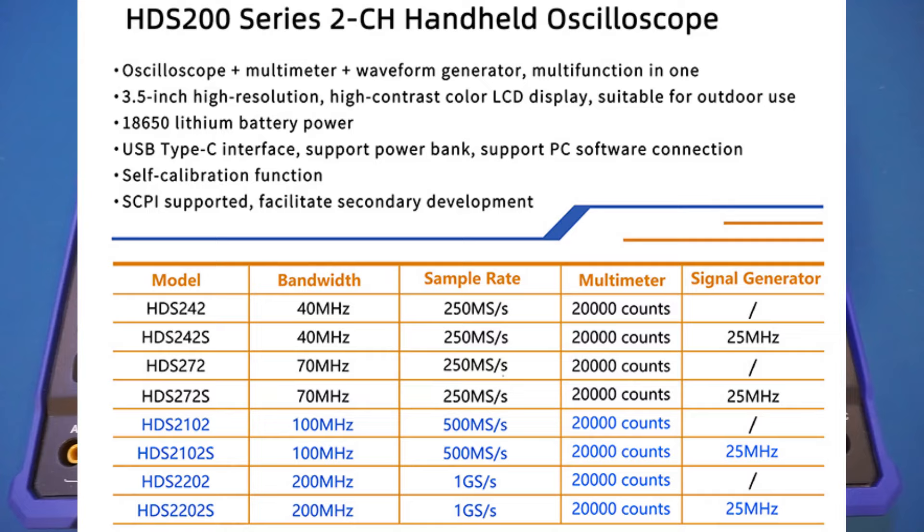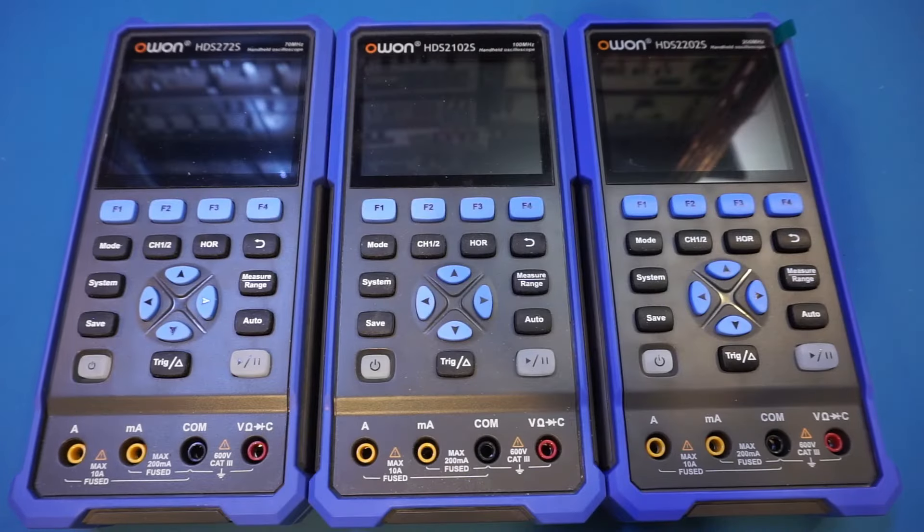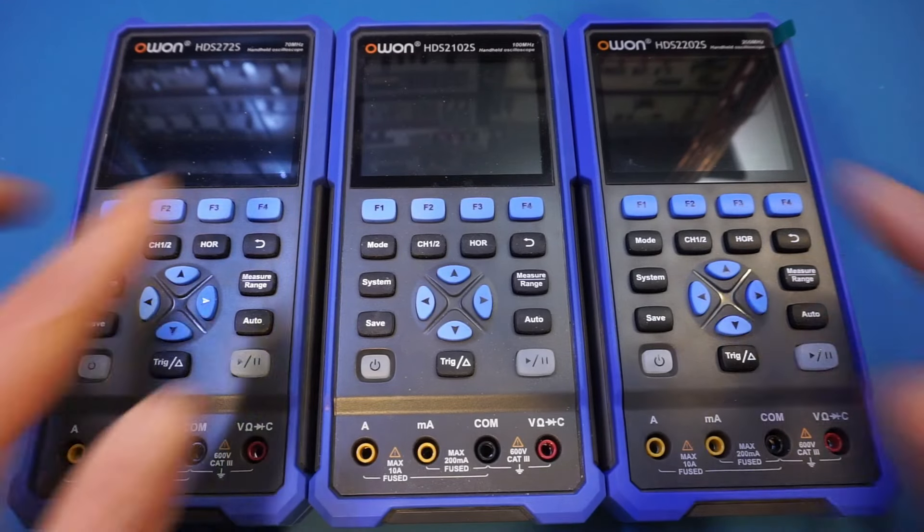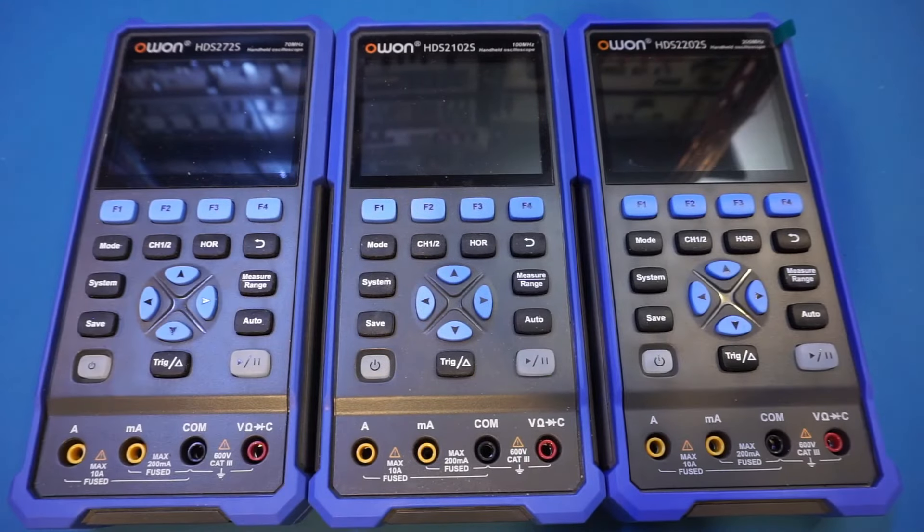Personally, if I were to buy one, I would definitely get the S version with the AWG, as it only costs slightly more. And when you do need a signal generator in the field, the built-in AWG will come in handy. Appearance-wise, you can see here, all these meters are essentially the same, except for the printed labels on the top.